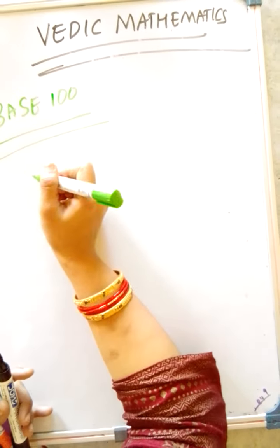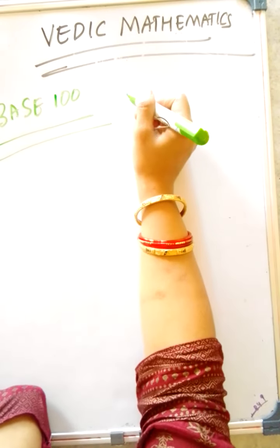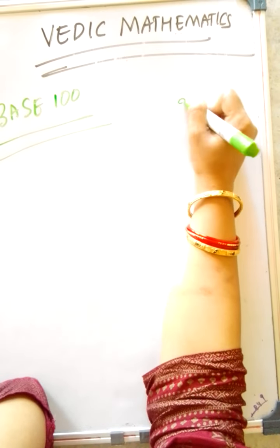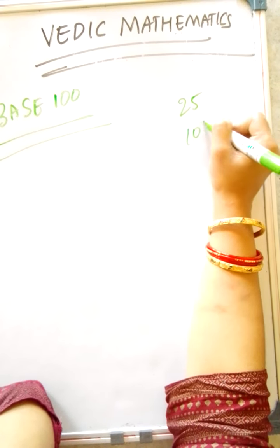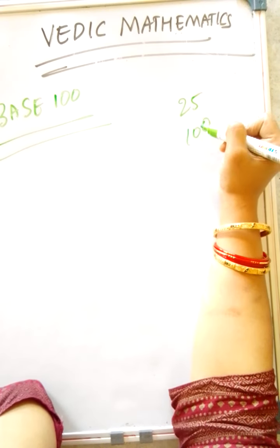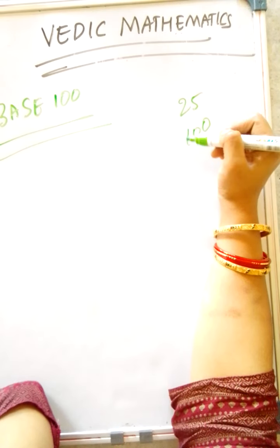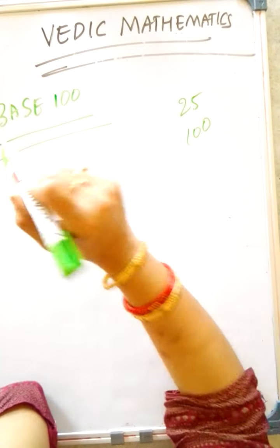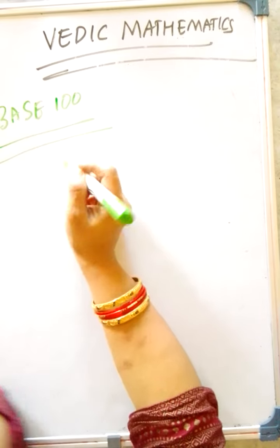Now, base 100. In the previous case, at base 50, we performed an operation where we reduced that much value from 25. Now, in this case, we have to subtract from 100 and write that much square. We have to reduce how much is lesser from 100 from the given number — not from 25, but from the given number only.